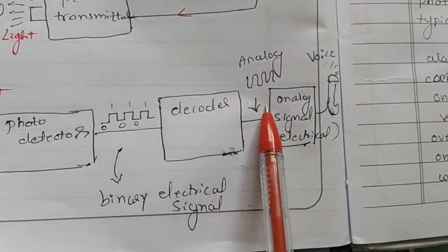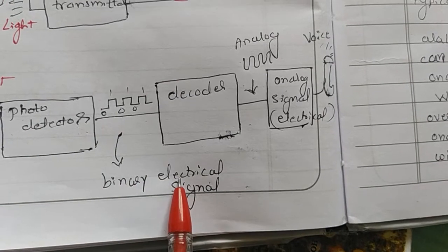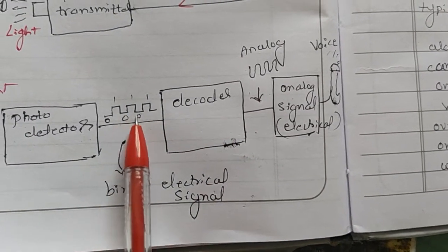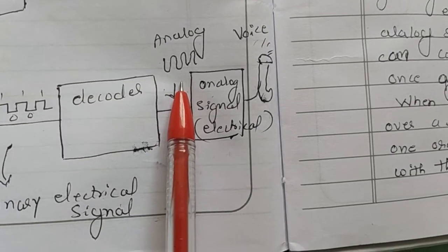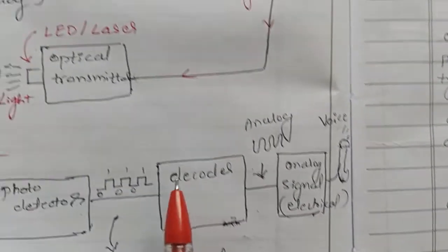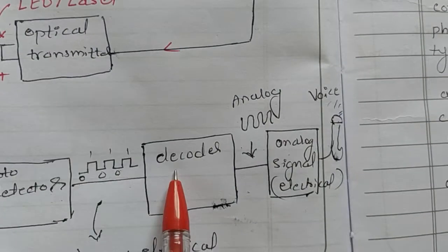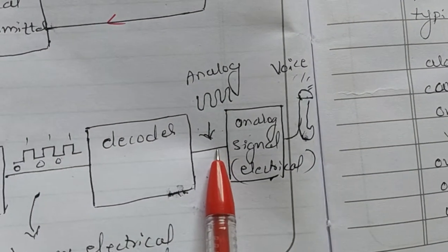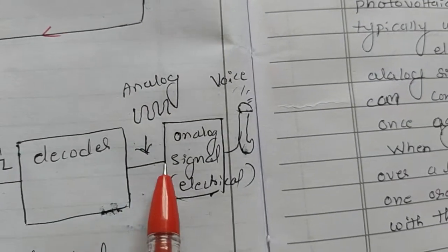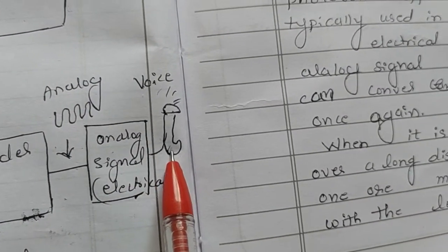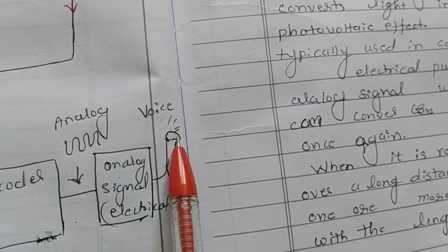The binary electrical signal is once again converted into an analog electrical signal using a decoder. If a device can process the binary electrical signal directly, this step is not required. However, since a telephone cannot process binary electrical signal, a decoder is used. The coder converts analog to binary (digital) signal, while the decoder converts binary back to analog signal — so the voice information is recovered at the receiving end.